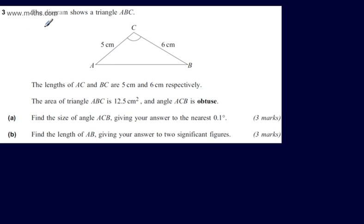This is question number 3. We're told the diagram shows a triangle ABC. The lengths of AC and BC are 5cm and 6cm respectively. The area of triangle ABC is 12.5cm squared and angle ACB is obtuse.